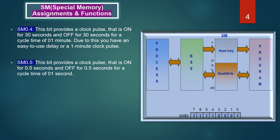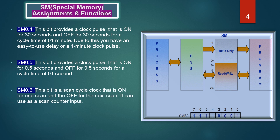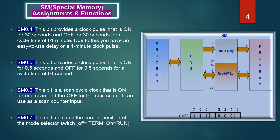SM 0.5: this bit provides a clock pulse that is on for 0.5 seconds and off for 0.5 seconds, for a cycle time of one second — an easy-to-use delay or one-second clock pulse. SM 0.4 and SM 0.5 have the same assignment and functions, just different timing. SM 0.6: this bit is a scan cycle clock that is on for one scan and off for the next scan; you can use it as a scan counter input.